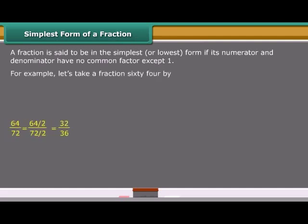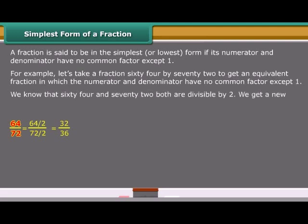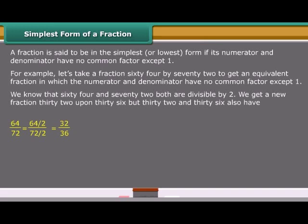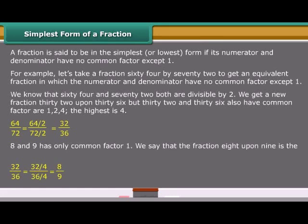Let us take a fraction 64 by 72 to get an equivalent fraction in which the numerator and denominator have no common factor except 1. We know that 64 and 72 both are divisible by 2. We get a new fraction 32 upon 36, but 32 and 36 also have common factors: 1, 2, 4. The highest is 4. 8 and 9 has only common factor 1. We say that the fraction 8 upon 9 is the simplest form of 64 upon 72.